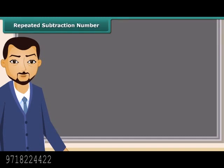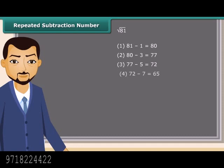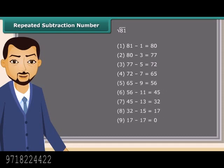We can find the square root of a given number using the repeated subtraction method. It is really easy. Consider the square root of 81 — just subtract successive odd numbers from 81 starting from 1 till the difference becomes 0. You have noticed it took 9 steps to get the difference as 0. Therefore, the square root of 81 is 9.